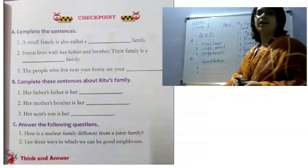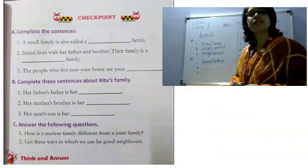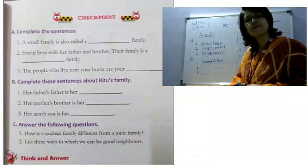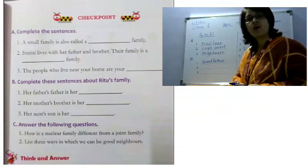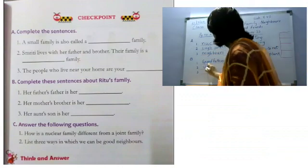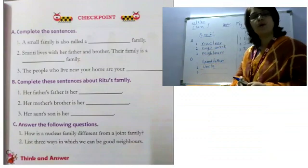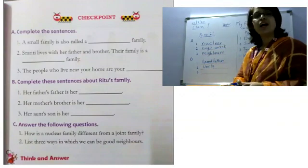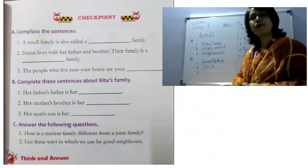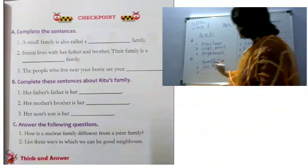Now second question. Her mother's brother is her... what do you call your mother's brother? Correct, they are called uncle. Now coming to the third question. Her aunt's son is her... what do you call your aunt's son? Right, they are cousins.